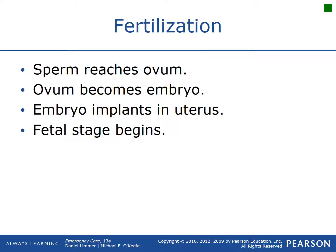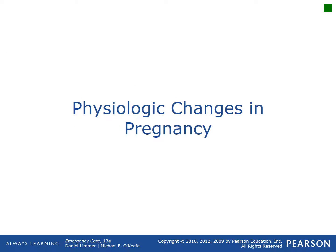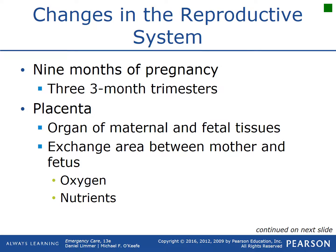As sperm reaches the ovum, it becomes an embryo. The embryo implants into the uterus where it's supposed to be, and that's where the fetal stage begins. Pregnancy lasts nine months, broken up into three three-month trimesters.